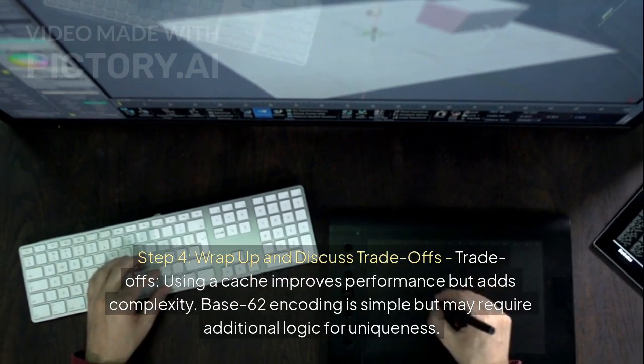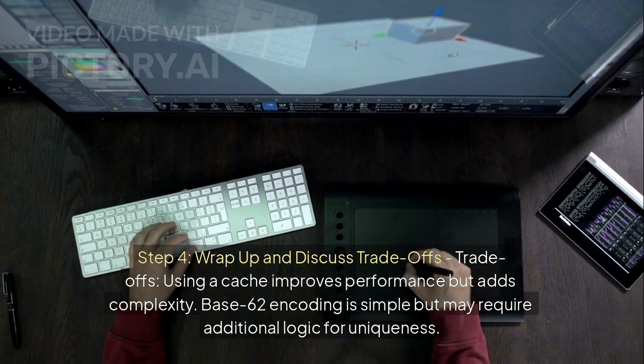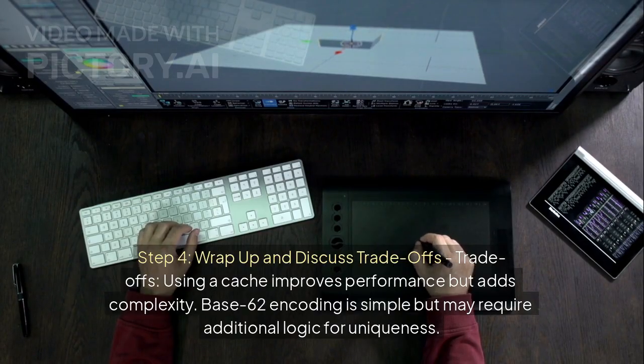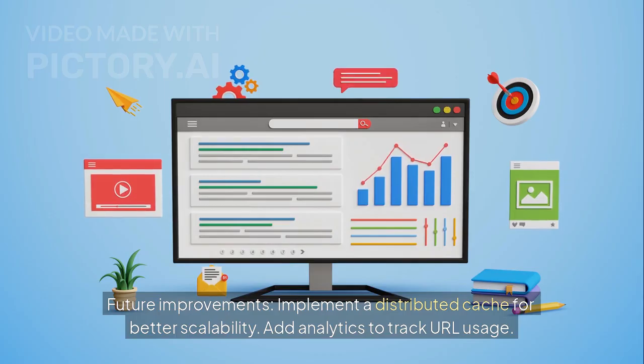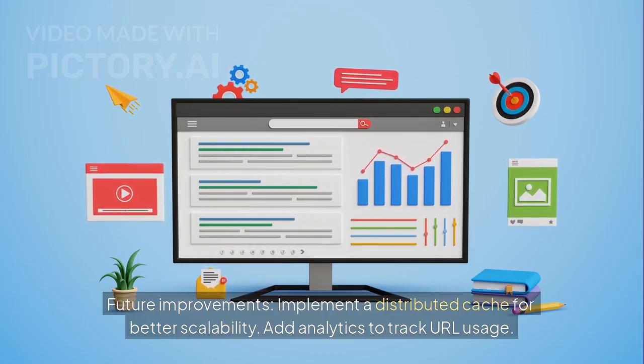Step 4: wrap up and discuss trade-offs. Trade-offs: using a cache improves performance but adds complexity. Base62 encoding is simple but may require additional logic for uniqueness. Future improvements: implement a distributed cache for better scalability and add analytics to track URL usage.